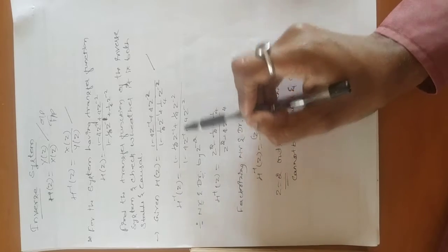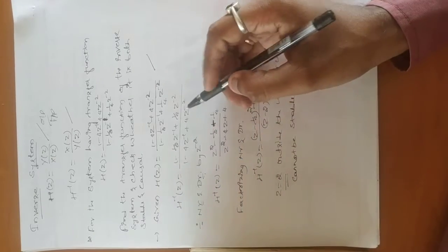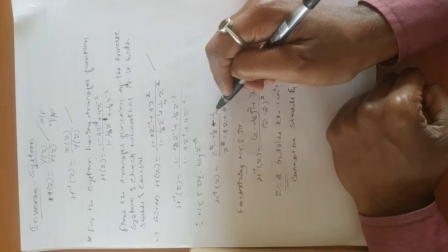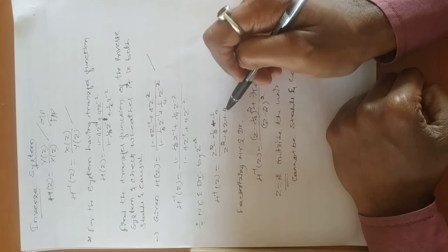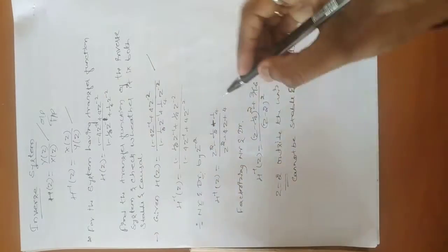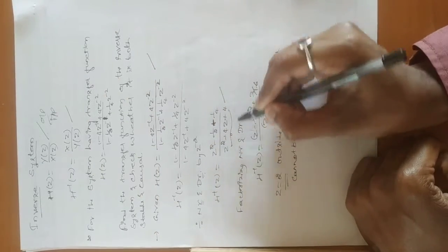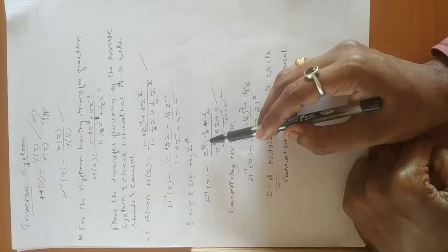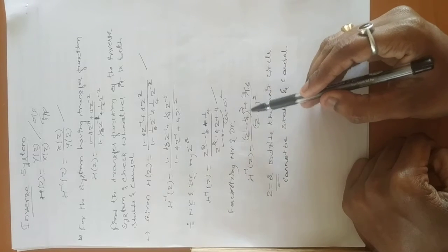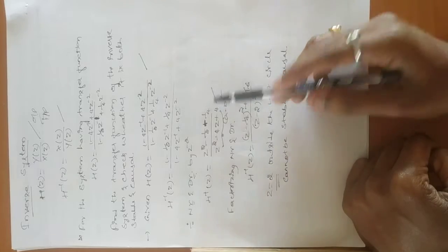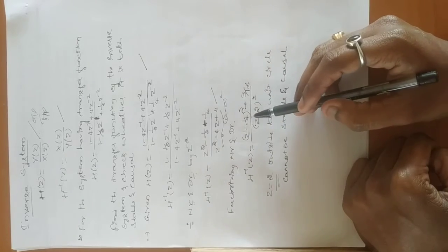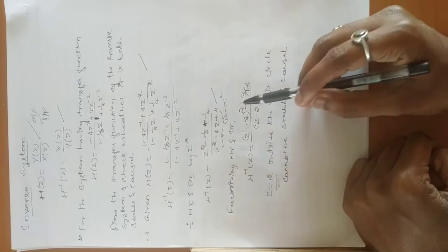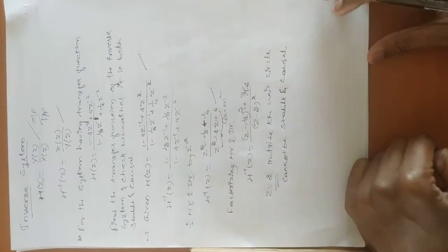So H_inverse(z), when you divide by z⁻², you get (z² - (1/2)z + 1/4) / (z² - 4z + 4). Now factorize the denominator in the form of (a - b)²: (z - 2)². Factorize the numerator also — you will get (z - 1/4)² + 3/16, giving values 1/4 and 3/16. The denominator gives (z - 2)².